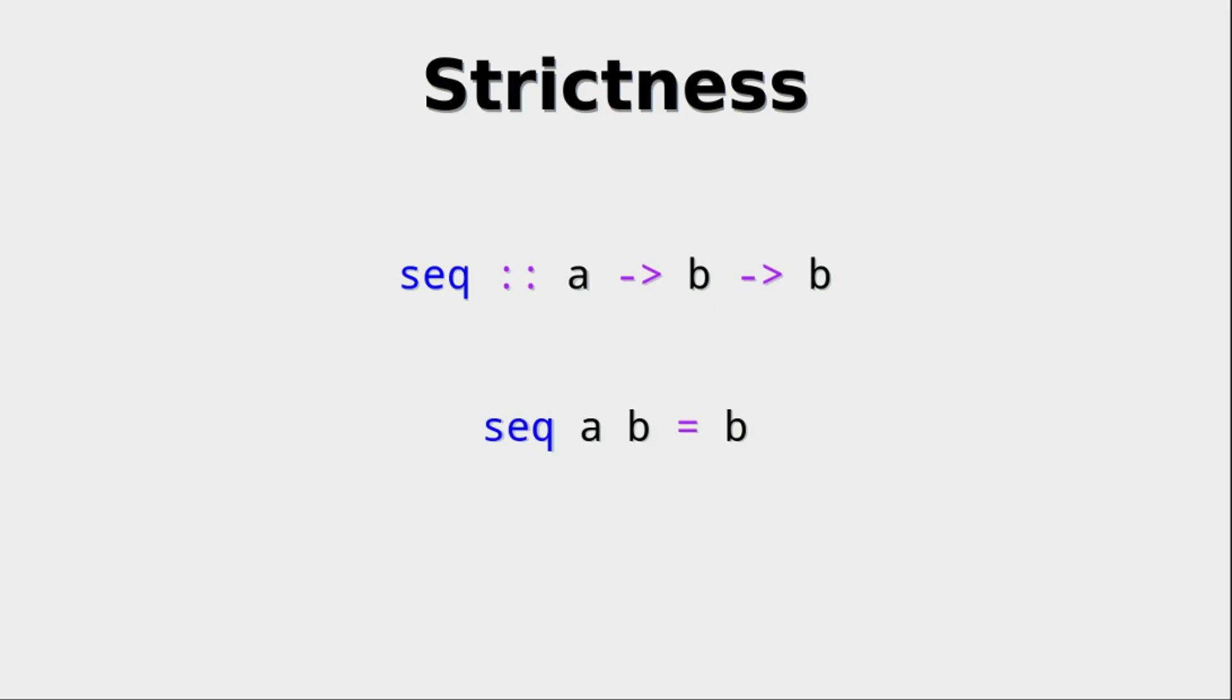Well, it gets two arguments, but returns the second and the first one is discarded as it seems. But that's not true. Because seq is strict in its first argument. What does that mean? Well, seq forces the evaluation of a before it returns b.